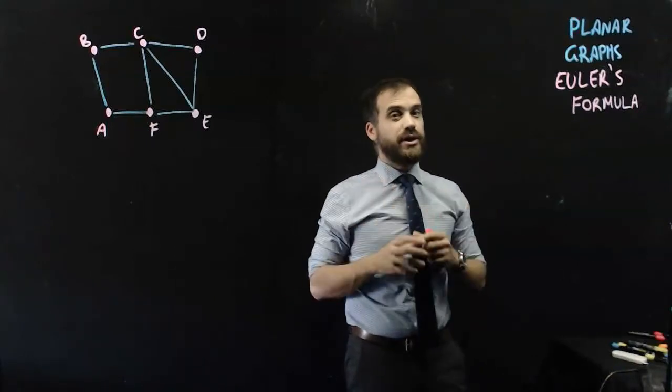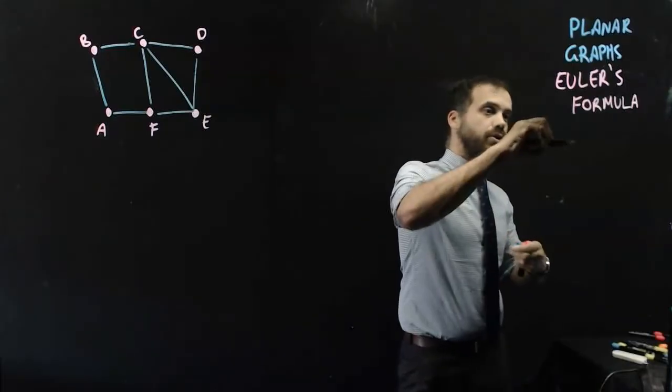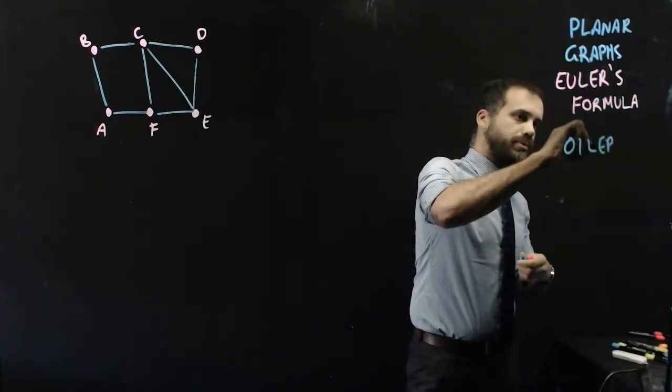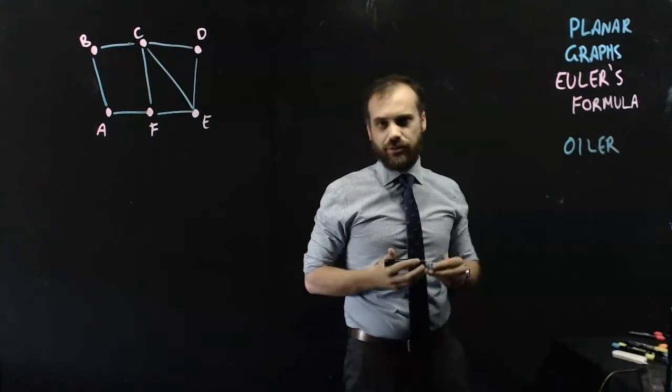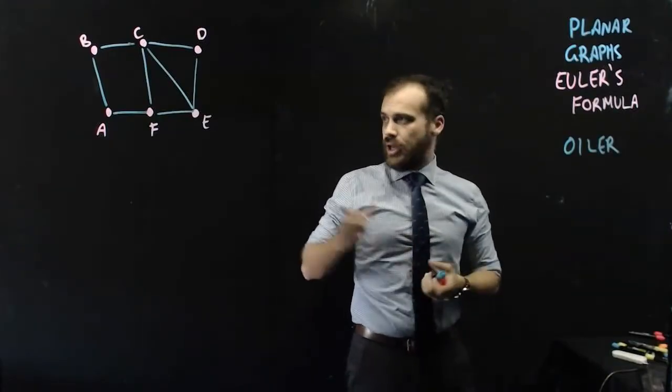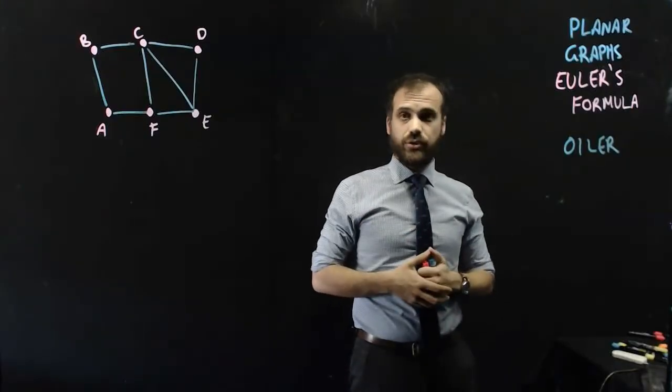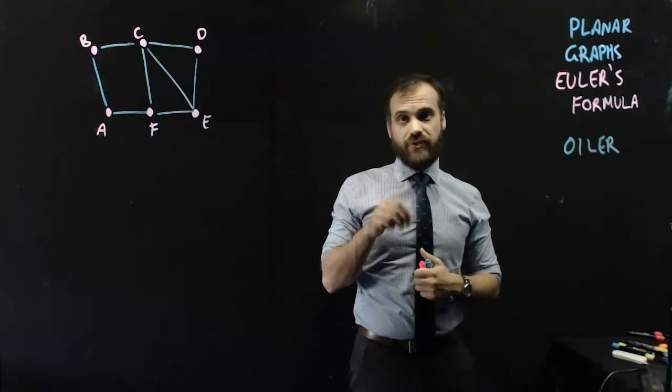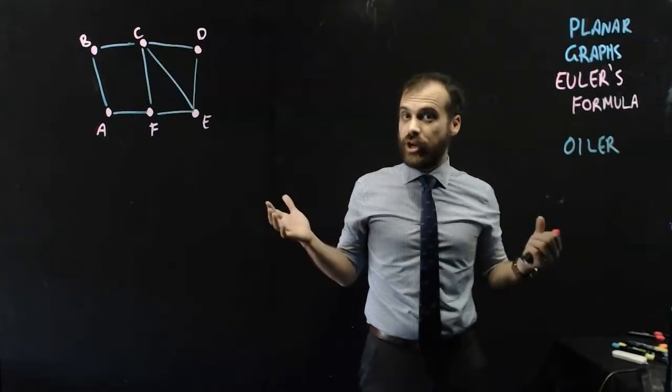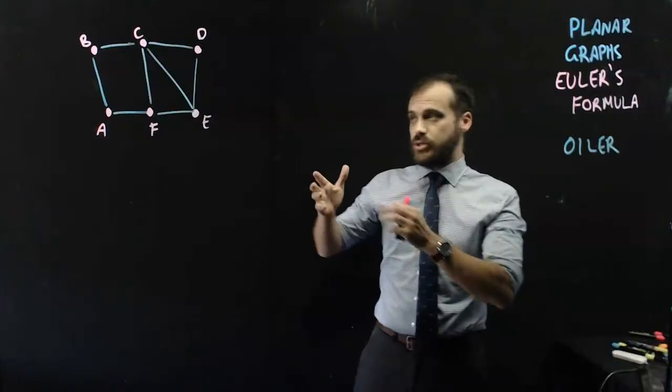Planar graphs again, this time we're looking at Euler's formula. Now again, I just said Euler. Please don't say Euler, it's really rude. Alright, this bloke, his name was Leonard Euler, and he invented this formula, Euler's formula. That's why it's called Euler's formula, and it is super famous. It's right up there with the quadratic formula and Pythagoras' theorem. So, what he said was,